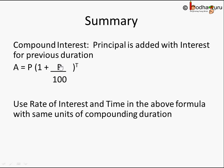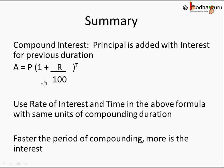The formula remains the same — just ensure rate and time are in the same unit. If compounding is half-yearly and rate is given yearly, use rate/2 and time×2. The faster the compounding period, the more interest: half-yearly gives more than yearly, quarterly gives more than half-yearly, and monthly compounding gives more than quarterly.